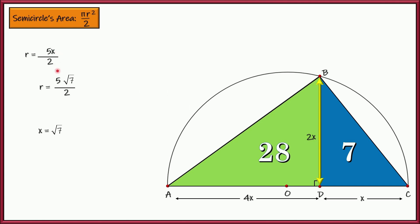So now we can just plug that value of x in right here. The radius is five x divided by two. So that's five root seven divided by two. That's our radius. That's all we need. Now we can plug that in. We can find the area of the semicircle. So r is right there. So let's go ahead and square it before we plug it into the formula because it is a little bit ugly. So let's go ahead and square it right here.